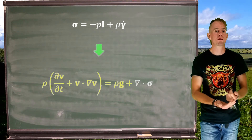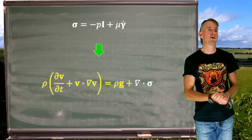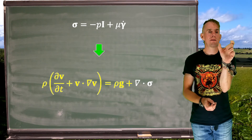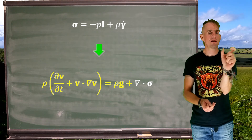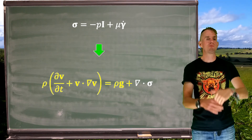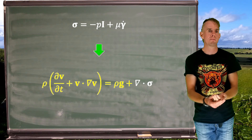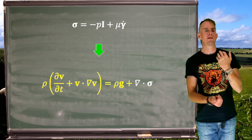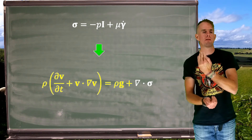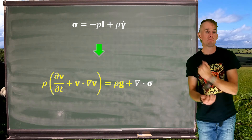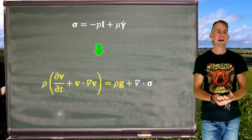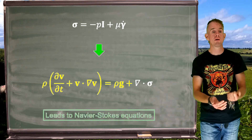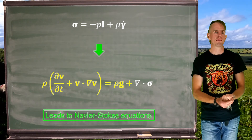You will recall from other fluid mechanics courses that we can use that definition of sigma, my total stress, in a force and momentum balance. The rate of change of momentum on the left-hand side is equal to the forces that give rise to the change of momentum on the right-hand side. If we work these two equations through, you end up with the Navier-Stokes equations.